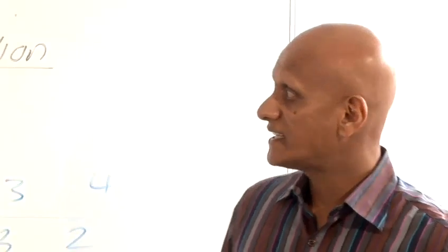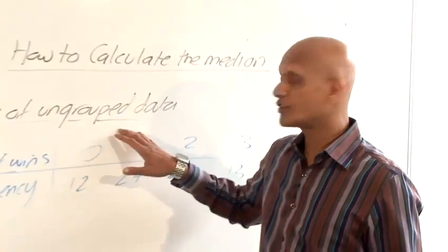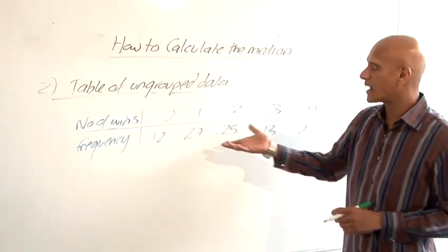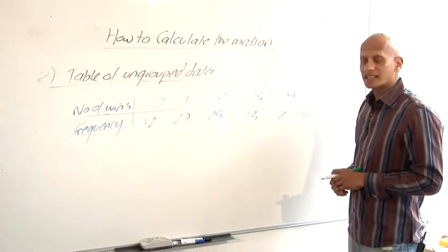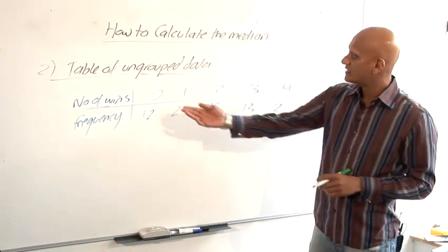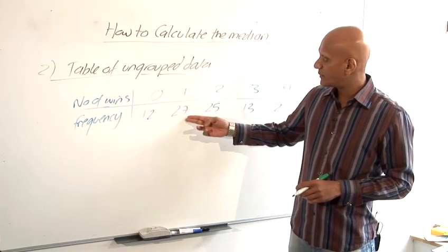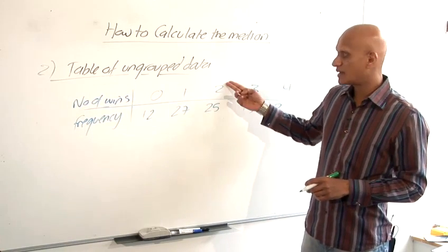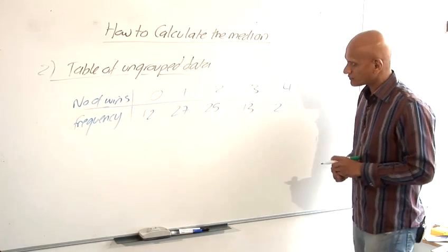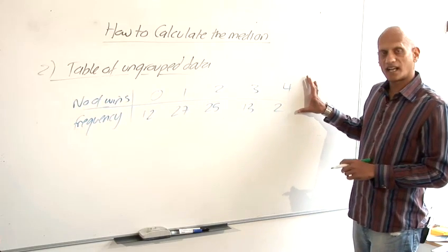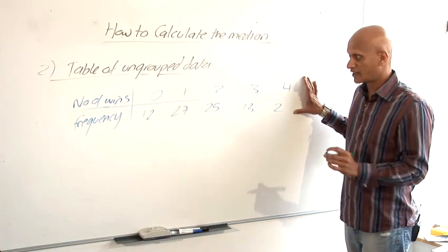Our second case is when we have a table of ungrouped data. So like this, this might be players in a poker tournament and these are the number of wins. So 12 people didn't win any matches, 27 people won one match, 25 people won two matches and so on. So this is a table of data and the method we use to find the median in this case is different.